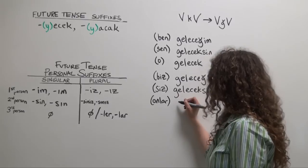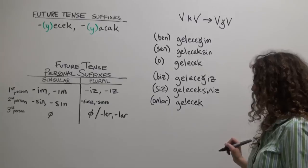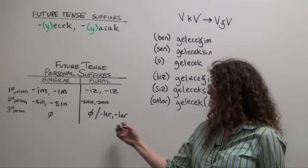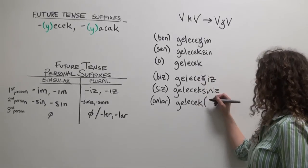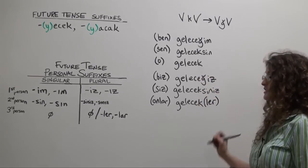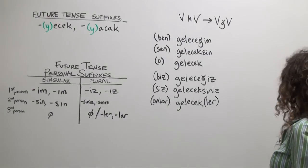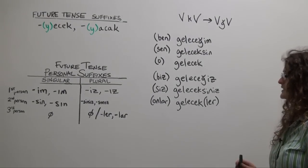Onlar gel ecek. They will come. Or we have the option of adding, according to the rules of two-way vowel harmony, our familiar plural suffix. So we can also say onlar gelecekler. They will come. With or without, it has the same meaning and is equally correct, depending on context.